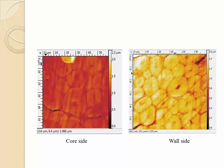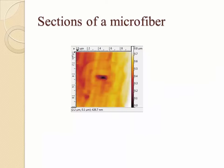Bamboo fibers are made of numerous microfibers. Our AFM images show that the average cross-section area for the fibers close to the core is larger than that for the fibers close to the wall of the bamboo. Moreover, different parts of the microfibers can be seen in the AFM images.